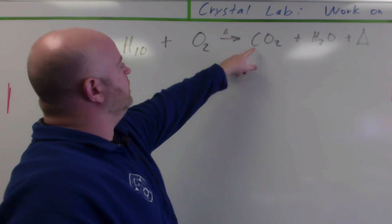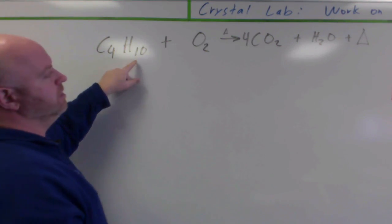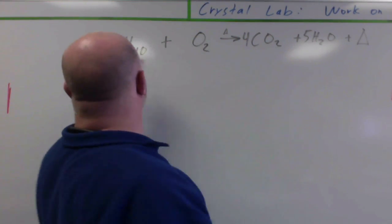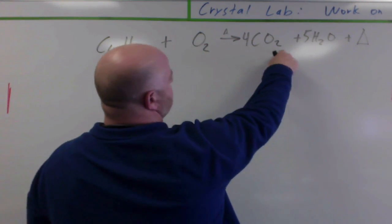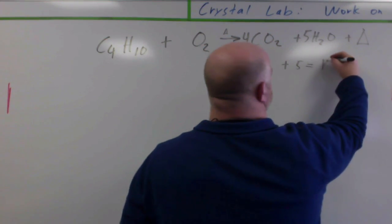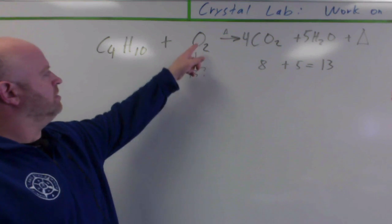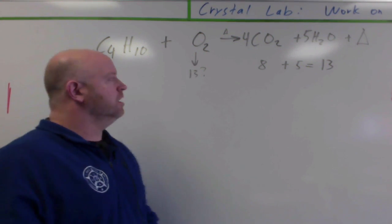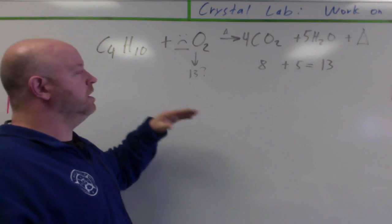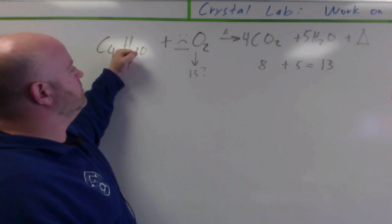I have four carbons on the left, only one carbon on the right, so I put a four there to make my carbons match. I have two hydrogens on the right and ten on the left, so I need five water molecules to match up — giving me ten hydrogens on each side, four carbons on each side. Adding up oxygens on the right: four times two is eight, plus five times one is five — eight plus five is thirteen. So I need thirteen oxygens on the left.